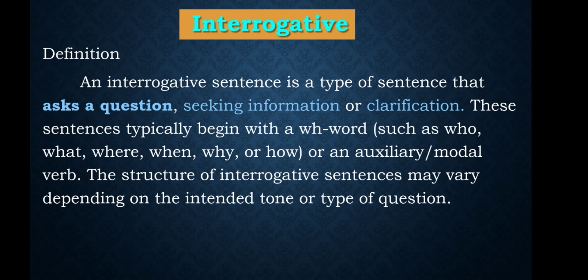The second type is the interrogative sentence. An interrogative sentence is a type of sentence that asks a question, seeking information or clarification. These sentences typically begin with a WH word such as who, what, where, when, why, how, etc., or an auxiliary or modal verb. The structure of interrogative sentences may vary depending on the intended tone or type of question.